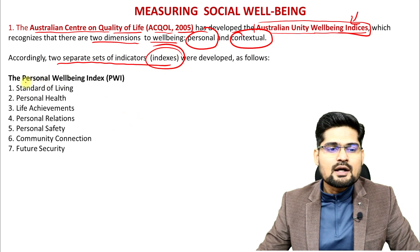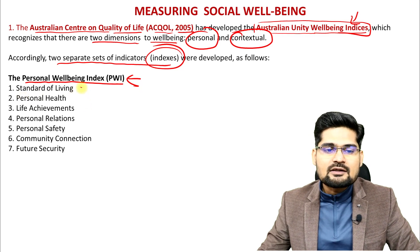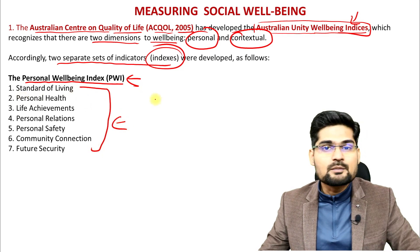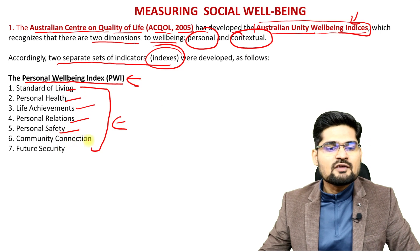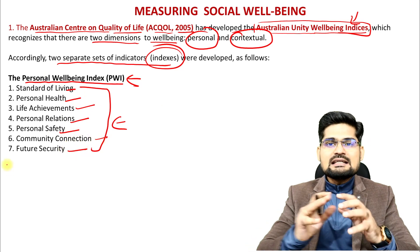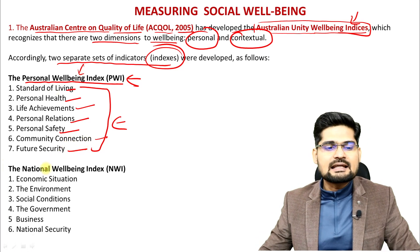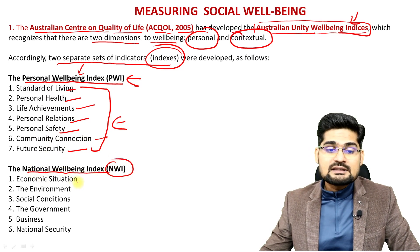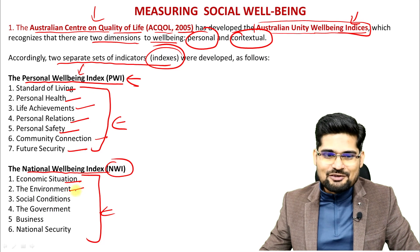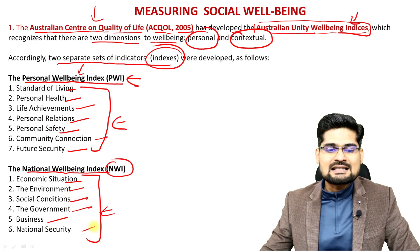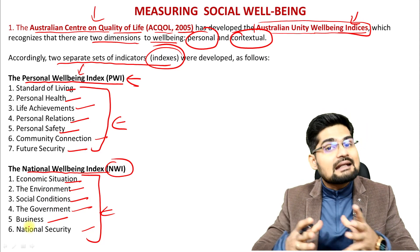The first is the Personal Well-being Index (PWI), calculated using seven dimensions: standard of living, personal health, life achievements, personal relations, personal safety, community connection, and future security. The second is the National Well-being Index (NWI), with six indicators: economic situation, environment, social conditions, government, business, and national security. These are the aspects to consider when measuring well-being at personal or national level.